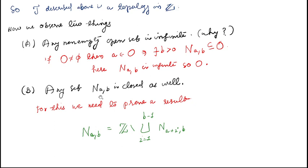The second observation: any set N(a,b) is closed as well. To prove this, we need two results: first that N(a,b) is open, and second that N(a,b) = Z \ [union from i=1 to b−1 of N(a+i, b)]. If we can show this identity, removing that union from Z gives us N(a,b), which would establish closedness.